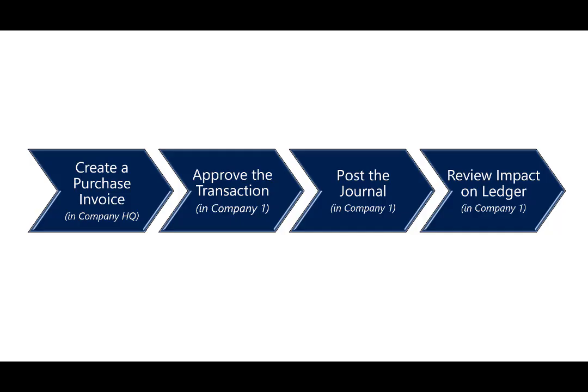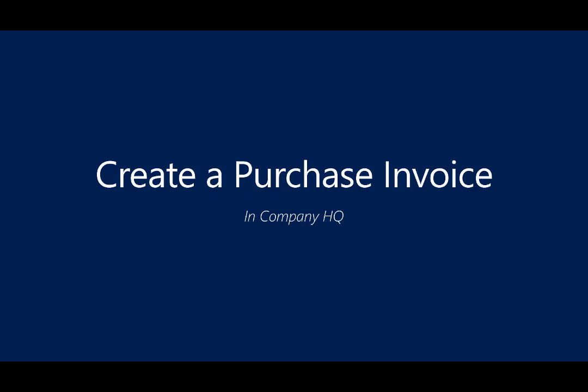In this scenario, we will create a purchase invoice in the headquarters company. Then I'll log into Company One to approve the transaction, post the journal entry while still logged into Company One, and review the impact on the ledger. The scenario is: I'm a parent company receiving an invoice from a vendor for consulting services. Some costs are incurred by the parent, and some will be deferred to the subsidiary — in our case, Company One.